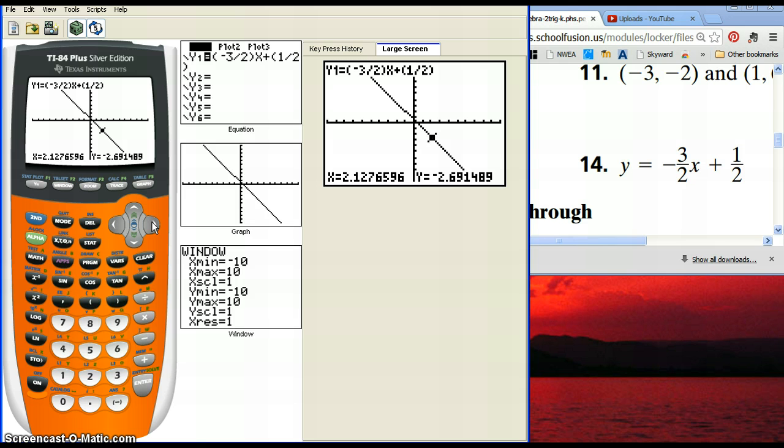If I wanted to pick an integer, for example, if I wanted to substitute in 4 into this equation, if you hit trace and then type the number 4, it's saying substitute in 4 for x. If you push enter, it will tell you that if you substitute 4 into your equation, you will get a Y value of negative 5.5. And that's the point on your graph.